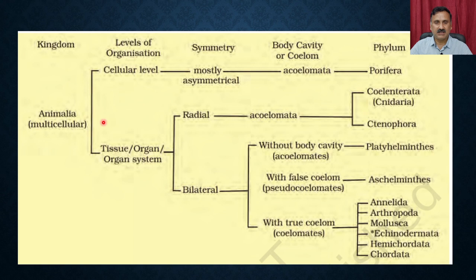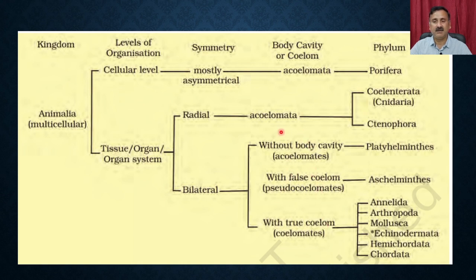When the organization is at the tissue level or organ system level, it could be radial or bilateral symmetry. If the symmetry is radial and acoelomate, it can be Coelenterata or Ctenophora. If bilateral, it could be acoelomate — such as Platyhelminthes or flatworms — pseudocoelomate such as Aschelminthes, or true coelomates such as Annelida, Arthropoda, Mollusca, Echinodermata, Hemichordata, and Chordata.